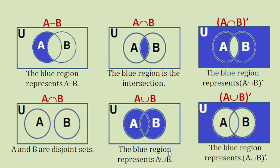First, we are going to discuss these illustrations. We use a rectangle to represent the universal set U and two circles to represent set A and set B respectively. This first illustration is A minus B — the blue region represents A minus B, and notice that the region common to A and B is being excluded. This here illustrates A intersection B, but if you look at the two sets, they don't intersect, so A and B are disjoint sets.